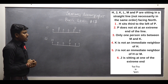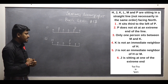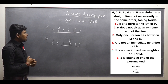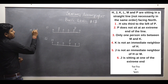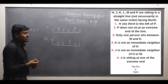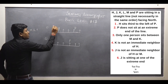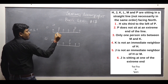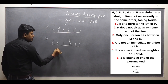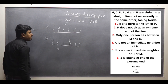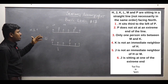Third point: only one person sits between M and K. So between M and K, there is only one person sitting. There are many possible positions, so we take note that between M and K there should be only one person. Fourth point: K is not an immediate neighbor of H. So the positions immediately adjacent to H are not for K. In both possible diagrams, those adjacent positions are eliminated for K.